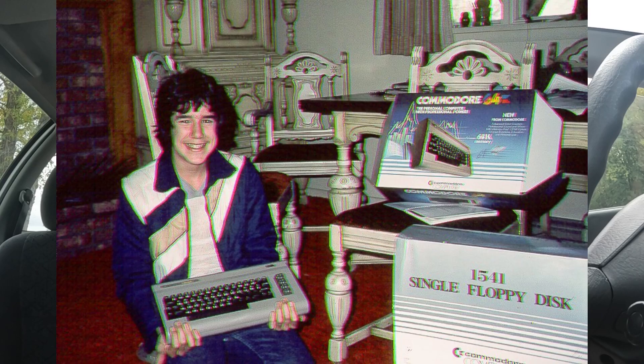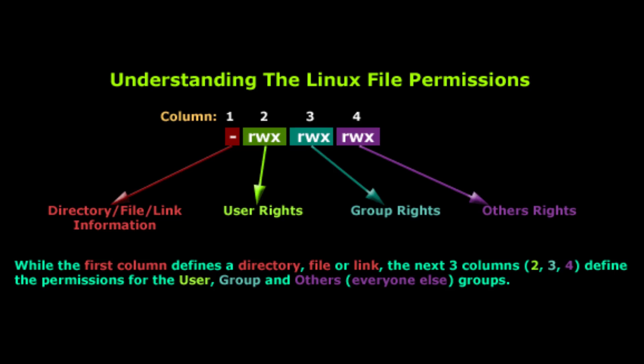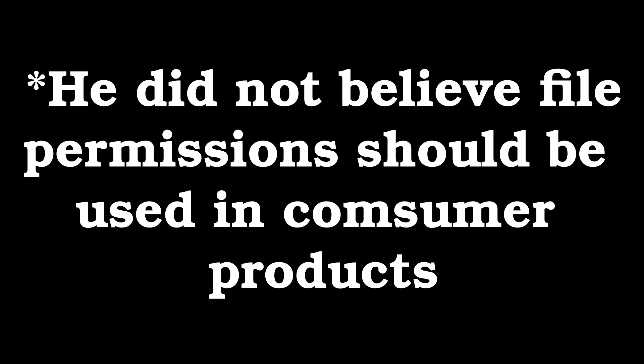TempleOS was basically a lighter-weight, simpler, and modern Commodore 64. The Commodore 64 was a really popular computer in the 1980s, and Terry Davis wanted to modernize that. He criticized Linux for being overly complex and having too many file permissions, and he wanted to simplify everything and keep it all under 100,000 lines of code — and he succeeded.